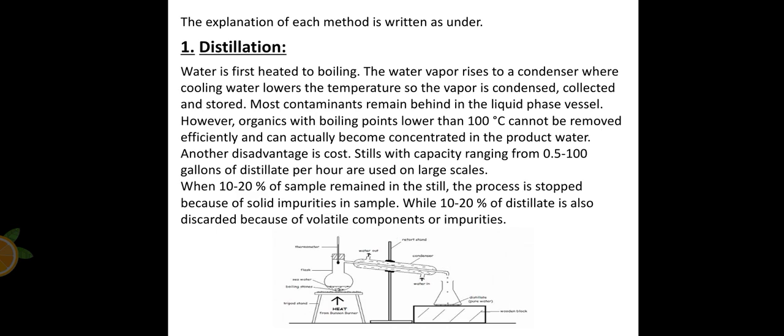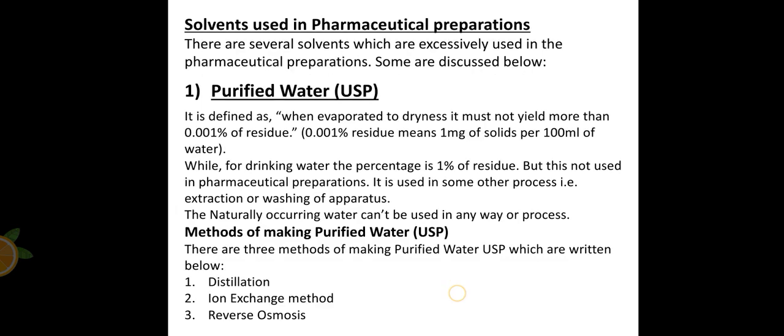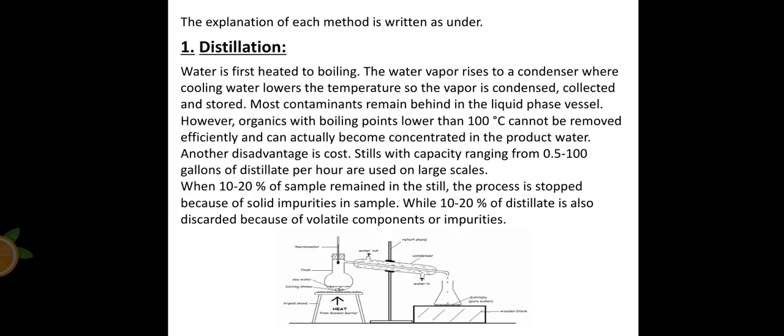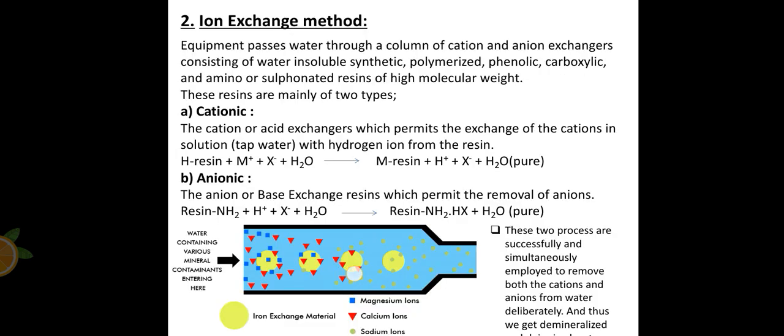The first one we have is distillation. In this flask here, water is present. First we heat the water and the vapors rise. The vapors rise to the condenser where the water vapors are then cooled to a lower temperature and they condense and then they're collected and stored. While the contaminants remain in the other vessels, we get purified water through the condenser.